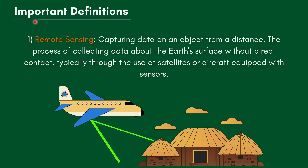Now we look at important definitions. Remote sensing is capturing data on an object from a distance — it is the process of collecting data about the Earth's surface without direct contact. This is typically done through the use of satellites or aircraft equipped with sensors. For example, to gather data about a village, we fly a plane with a sensor over it to capture the information without direct contact.